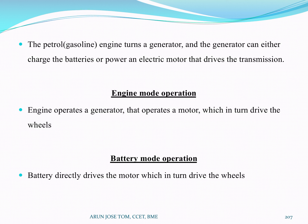The engine is used to produce electricity and the motor is used to do work. The engine produces electricity, and the battery is used to supply the motor. The battery is charged by the IC engine. The battery is used to produce electricity, and it is also used to charge the battery for operation.